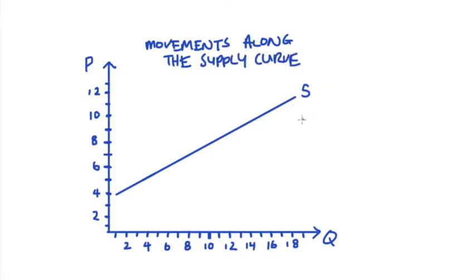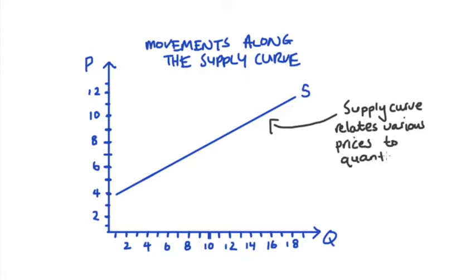It's important at the outset to realize that our supply curve, so that's the actual line here, tells us about the relationship between the price in the market and the quantity that is supplied either by a firm or by the market. This relationship is ceteris paribus, so holding everything else that could affect supply constant.